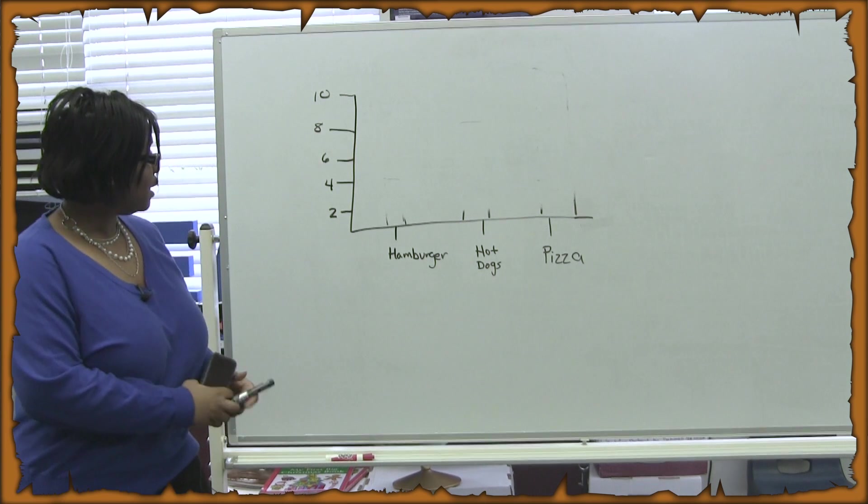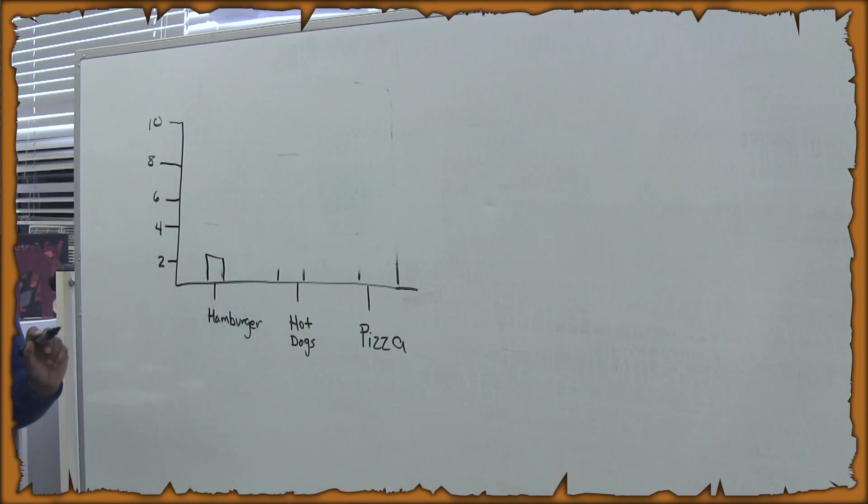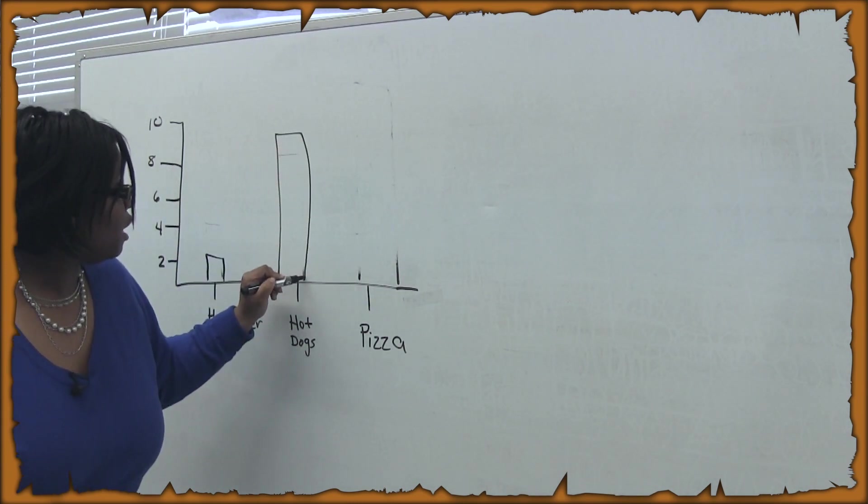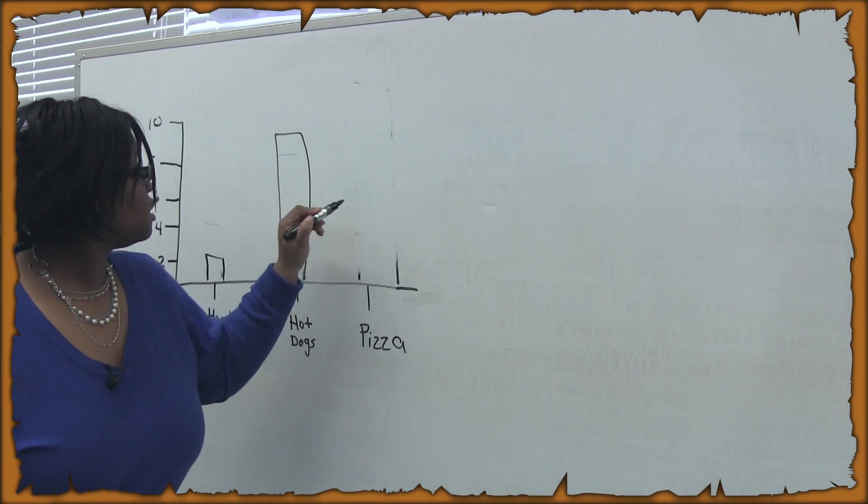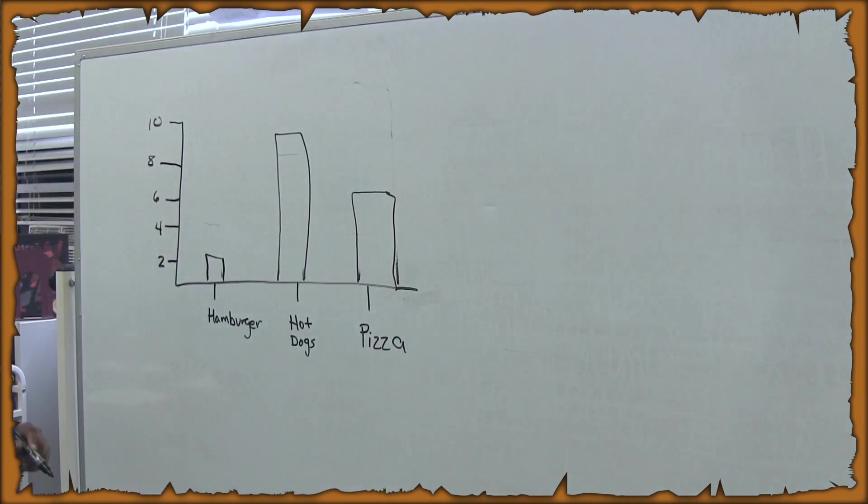So, we know that in our class only two people actually like hamburgers. And we know that eight people actually like hot dogs. And six people actually like pizza.